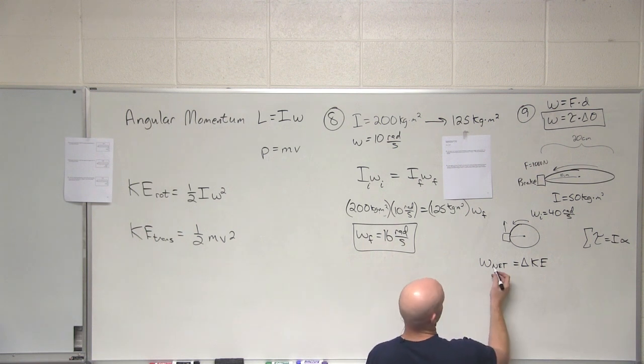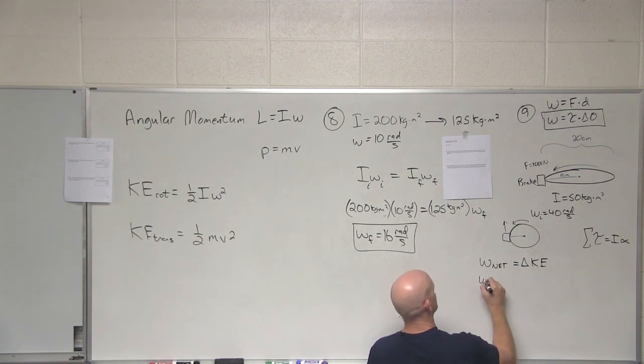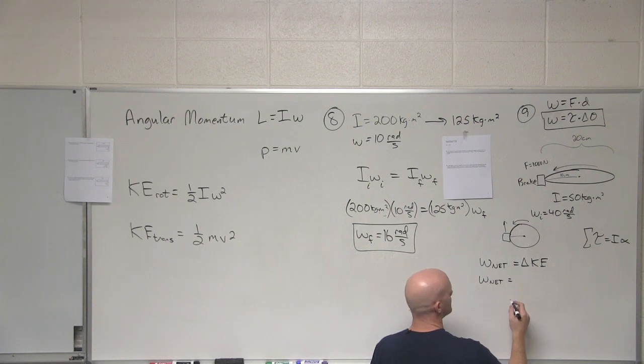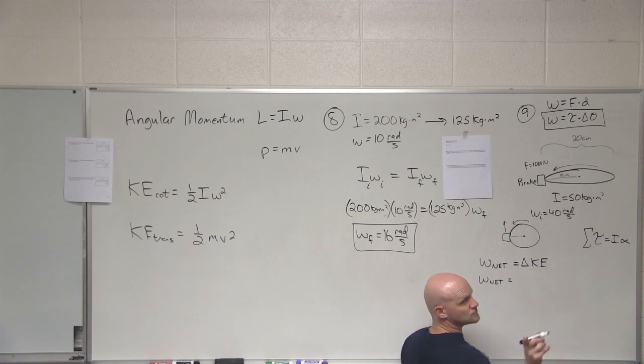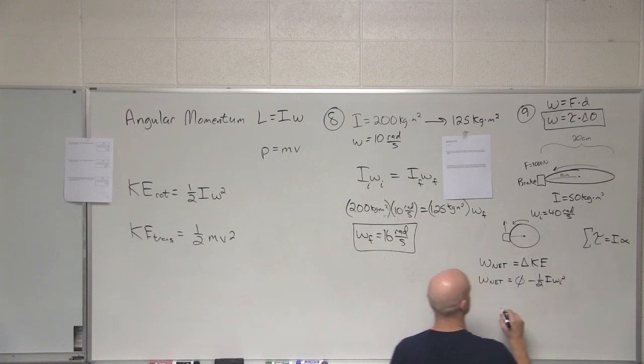So in this case, what's the final kinetic energy of this wheel? Half I omega squared. The final after it stops. Oh, then zero. Cool. So final minus initial, and the initial would be one-half I omega initial squared.